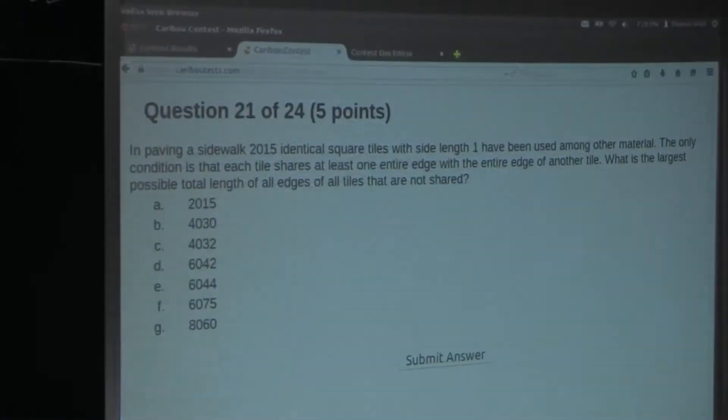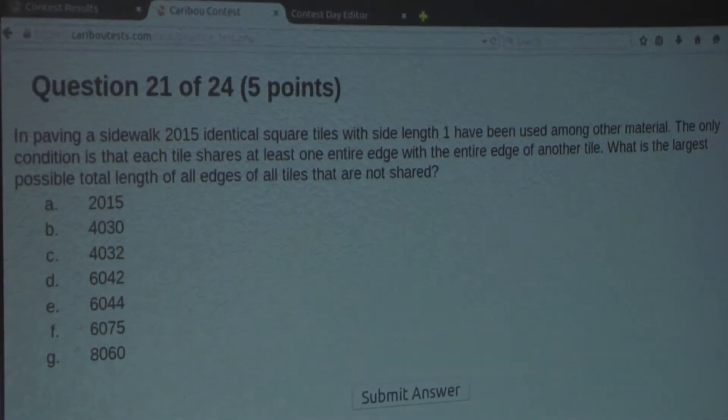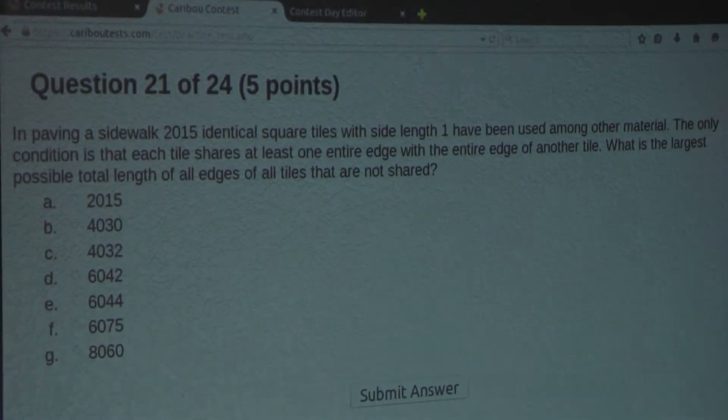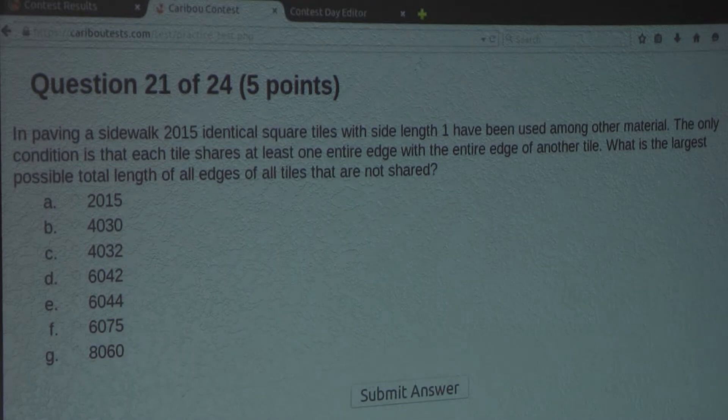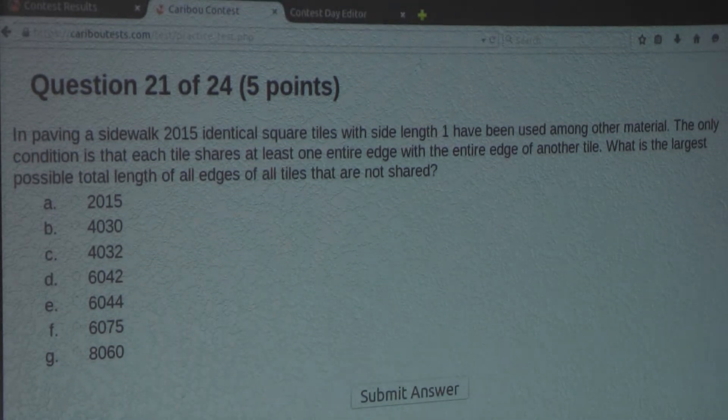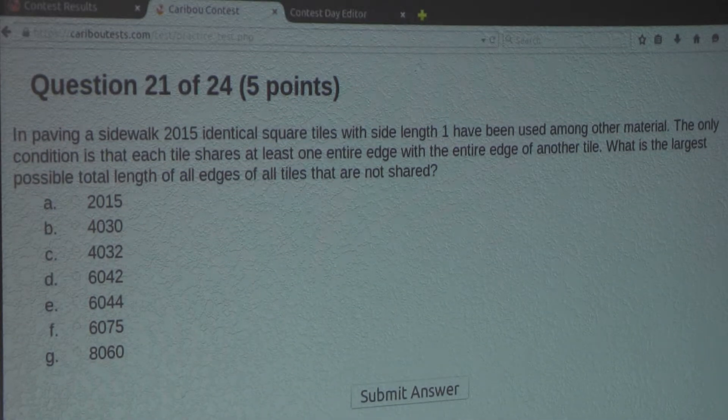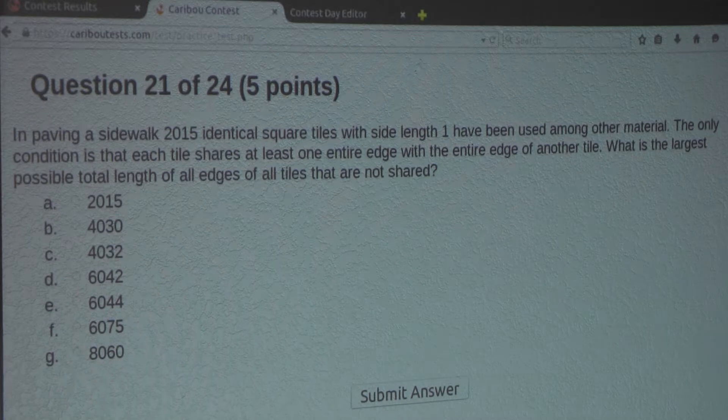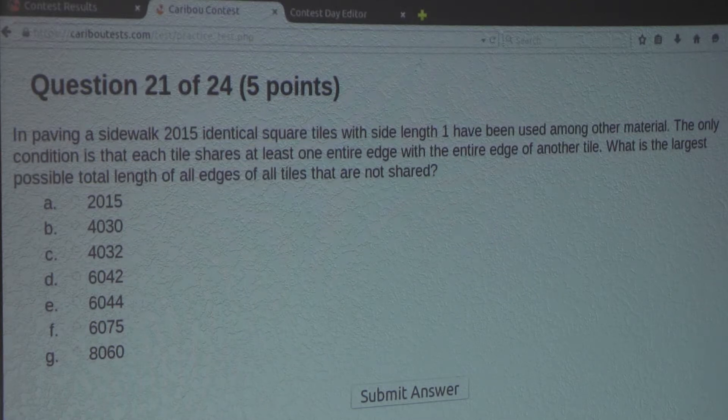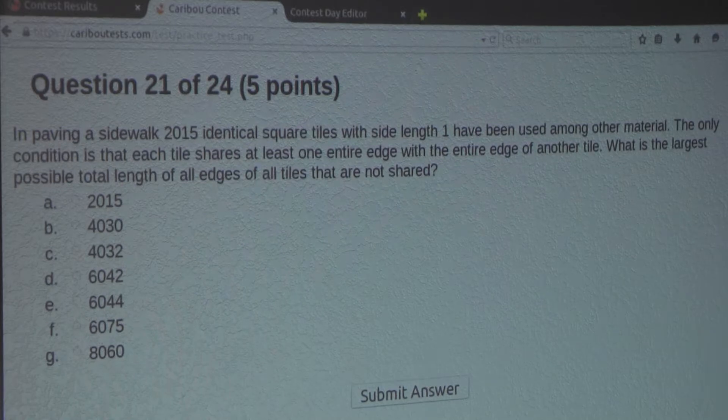So the question is, in paving a sidewalk, 2015 identical square tiles with side length 1 have been used among other material. The only condition is that each tile shares at least one entire edge with the entire edge of another tile. What is the largest possible total length of all edges of all tiles that are not shared?